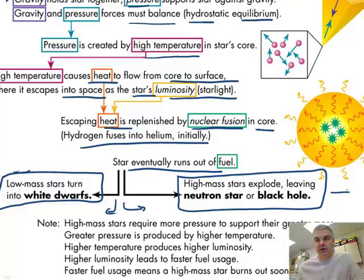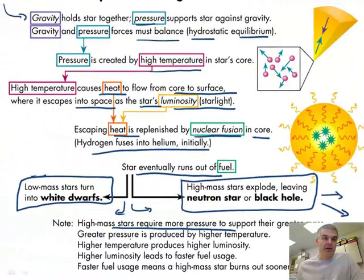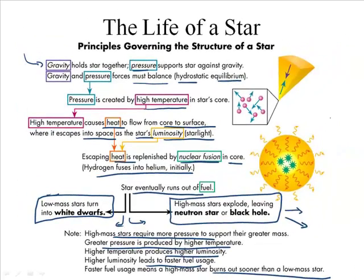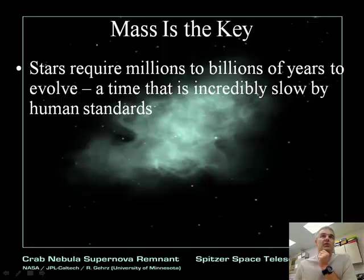High mass stars require more pressure to support their greater mass. Greater pressure is produced by higher temperature. Higher temperature produces higher luminosity. Higher luminosity leads to faster fuel usage, meaning a high mass star burns out sooner than a low mass star. If you can understand this, you can figure out basically this entire chapter.